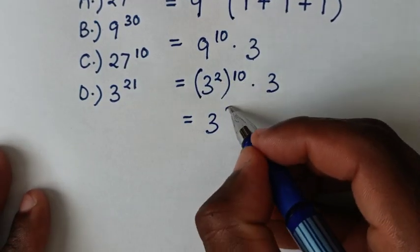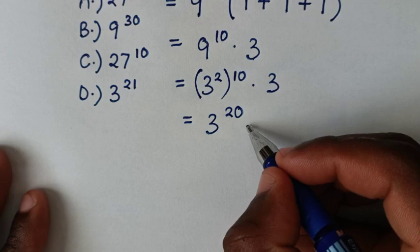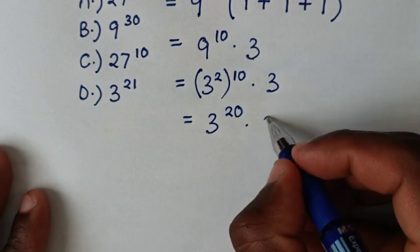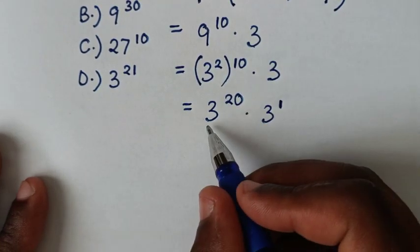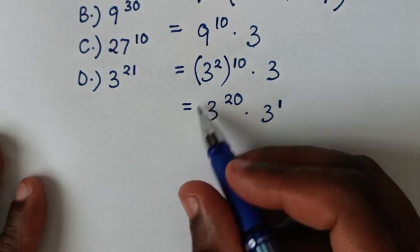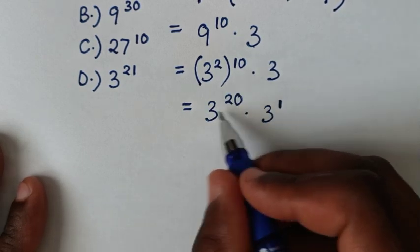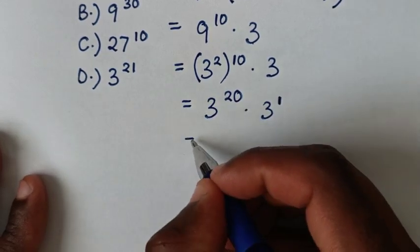3^20 times 3^1. Now we have multiplication of exponents with the same base of 3 but different powers.